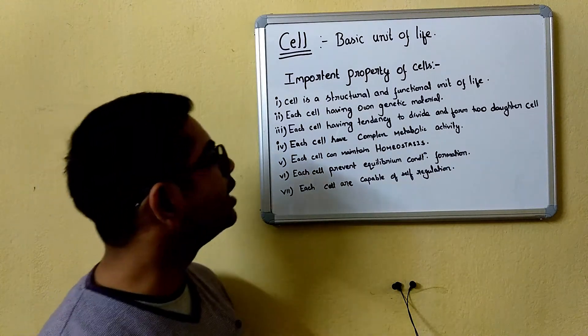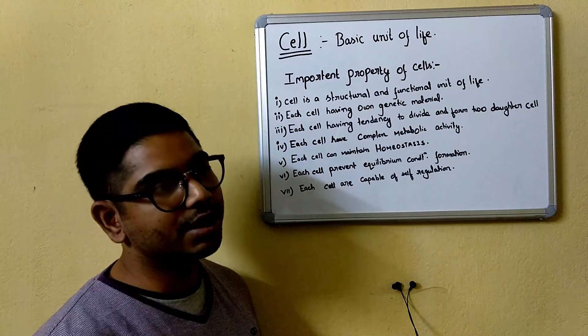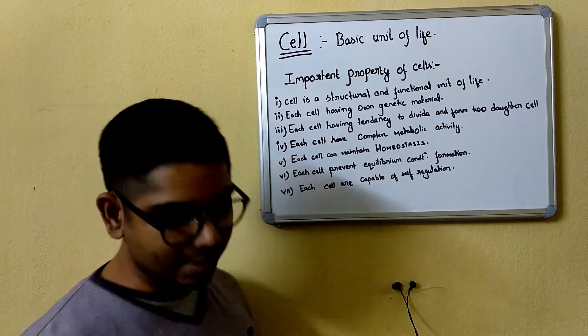Fourth, each cell has complex metabolic activity. What is metabolic activity? Metabolic activity is categorized into two subclasses.